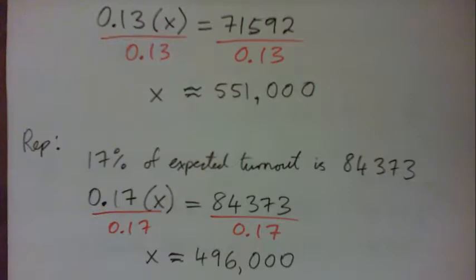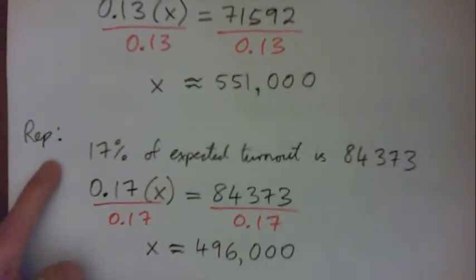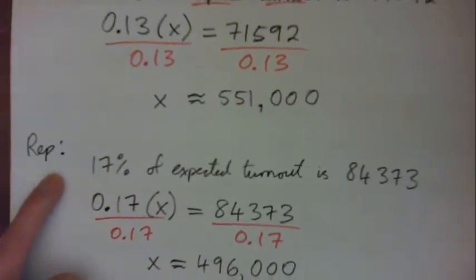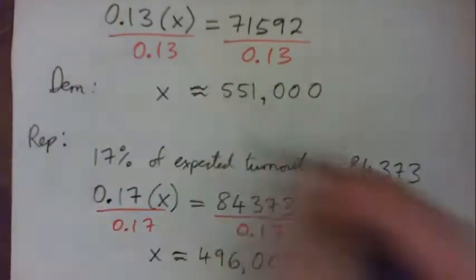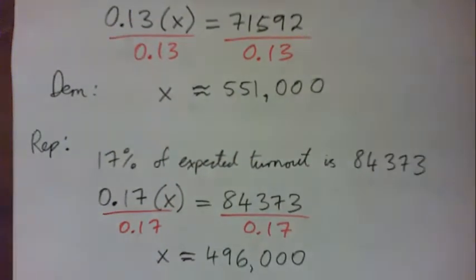And so then, what's the answer? Well, it's 496,000 for the Republican primary turnout, and this is the Dem here—the Dem primary turnout is 551,000. But the question was asking for the total, right? So for the total, we just add them.